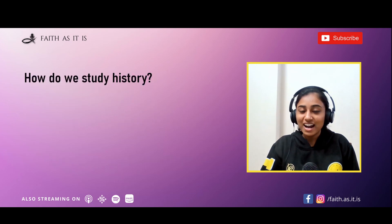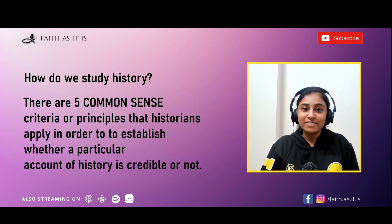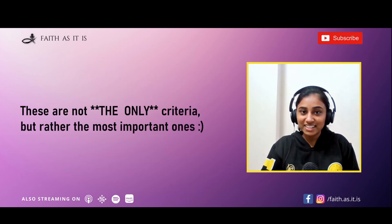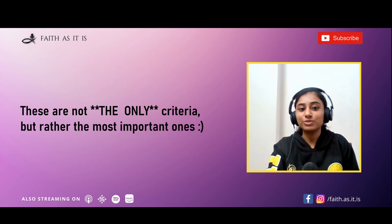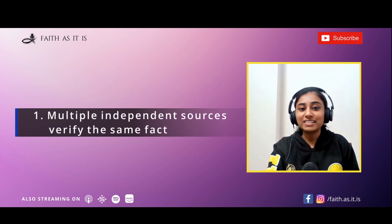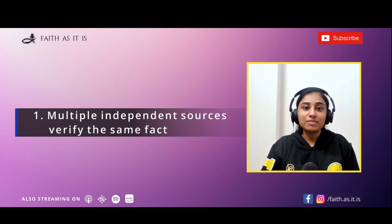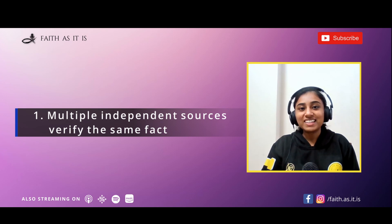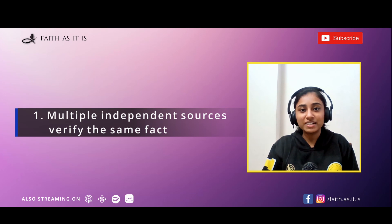I will give you five common sense criteria that historians apply to prove whether an account is credible or not. These are not the only five, but they are of very high importance to our case. The first one: if multiple independent sources verify the same fact, that makes it more credible. An independent source means each witness has direct knowledge — if I tell Ruth and she tells Phillips, that is just one independent source, not three.